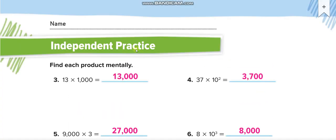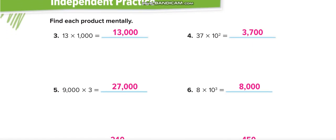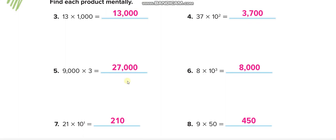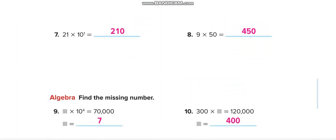For independent practice, solve the questions by yourself and then match your answers from the video. For example, ten to the power three means one thousand, so eight times one thousand equals eight thousand. Thirty-seven times ten to the power two: the power tells you the number of zeros, so thirty-seven with two zeros is three thousand seven hundred.